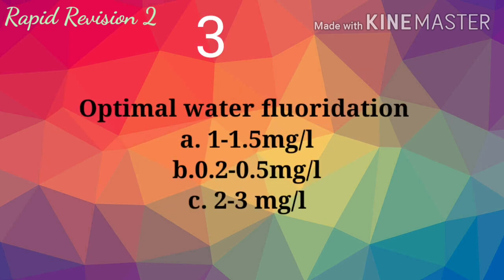Optimal water fluoridation. A. 1–1.5 mg per litre. B. 0.2–0.5 mg per litre. C. 2–3 mg per litre. Answer is A: 1–1.5 mg per litre.